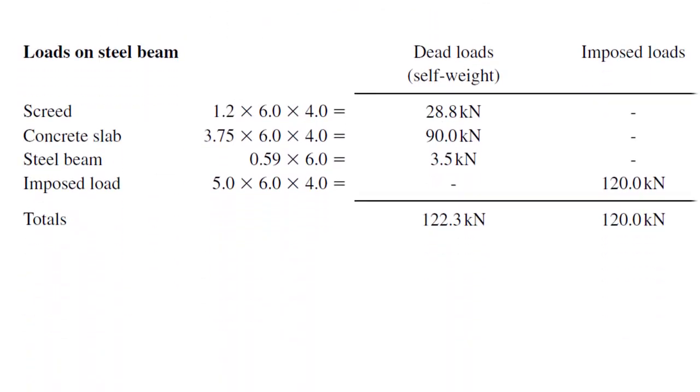Next, we will calculate loads on steel beam. First load is load of the screed, it's a dead load. 1.2 is the screed weight, which is given in the design data. 6 times 4 is the shaded area. Once we multiply these three values, we can get the load of screed as 28.8 kilonewtons.